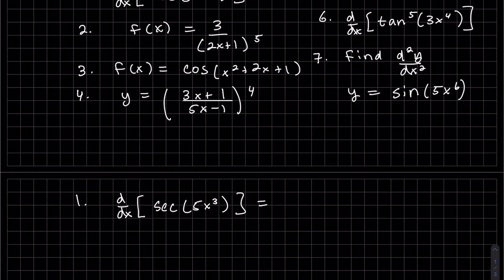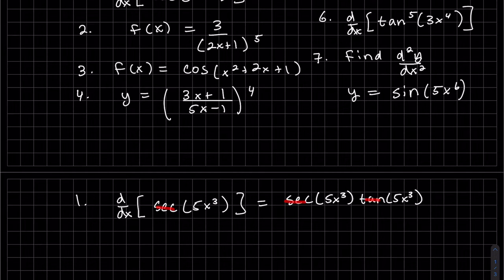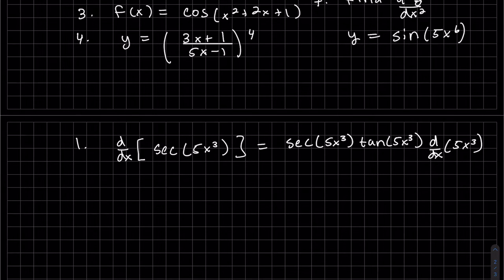Again, it's the derivative of the outside times the derivative of the inside. The outside function is secant, so the derivative of secant is secant times tan of the same angle — that angle does not get changed. So it's secant times tan. The derivative of secant is secant times tan of the same angle; it does not get changed. Then we chain rule it times the derivative of the inside function, which is 5x to the third. The derivative of 5x to the third — I'm going to put that in the front and copy the rest.